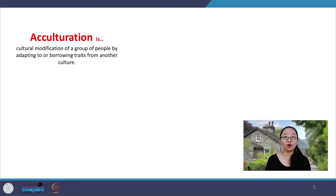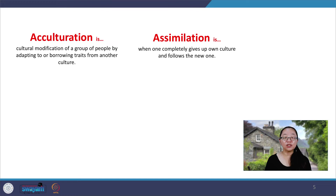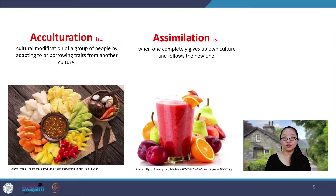But each culture is still able to retain unique cultural markers, whether language, food, or custom. Acculturation over a longer period of time leads to assimilation. Assimilation is when one completely gives up their own culture and follows a new one. The fruit bowl and the fruit juice is a metaphor — the fruit bowl for acculturation, and the fruit juice for assimilation. In the fruit bowl, we can still see and taste each fruit, but in the fruit juice, all the fruits blend and form a new taste. So assimilation is also known as the melting pot.